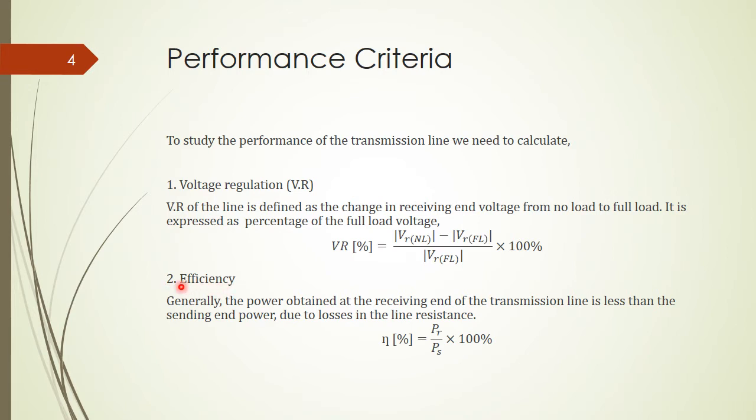Secondly, we need to look at the efficiency of the transmission line. In general, the receiving power at the receiving end will be less than the power that is input into the sending end. Therefore, the efficiency eta is calculated via Pr over Ps.